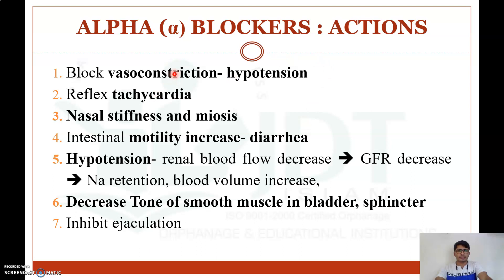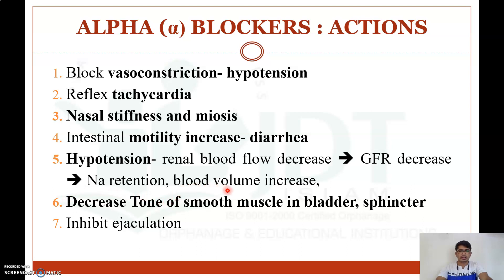Alpha blockers block vasoconstriction, producing hypotension. They do not directly produce vasodilation, but due to decreased peripheral resistance there is decreased blood pressure — hypotension — and reflex tachycardia, nasal stuffiness, and miosis. Intestinal motility decreases, which may lead to diarrhea. Hypotension leads to decreased renal blood flow, which may lead to decreased glomerular filtration rate, increased sodium retention, and increased blood volume.